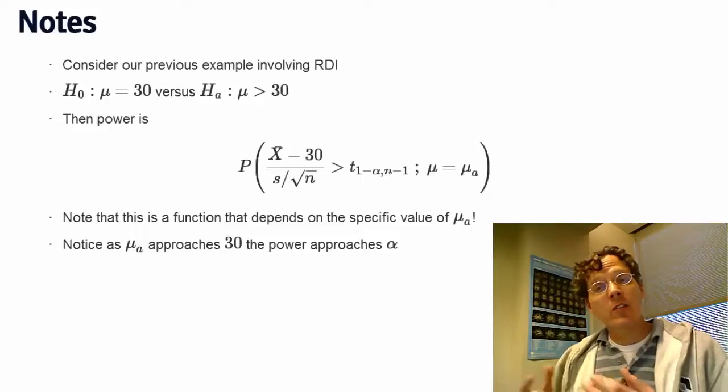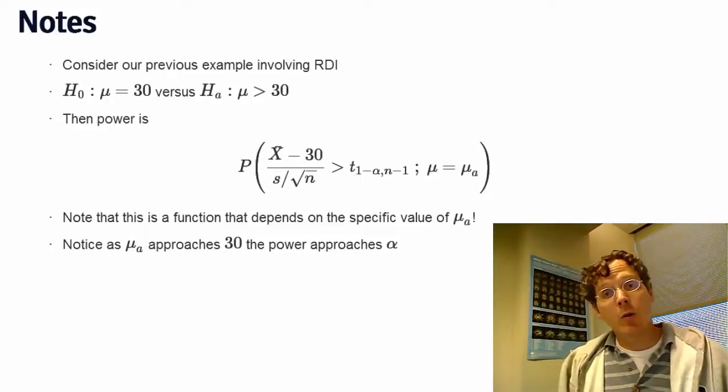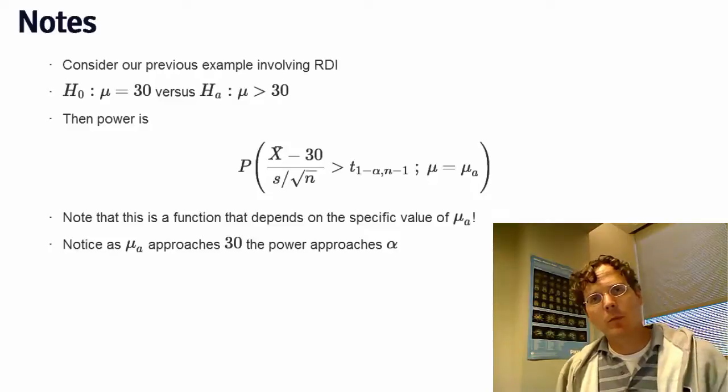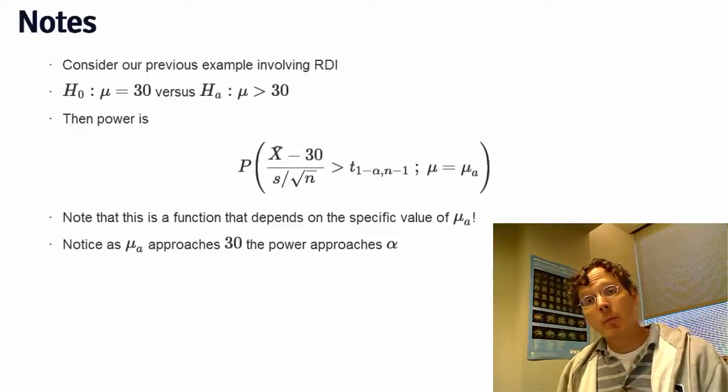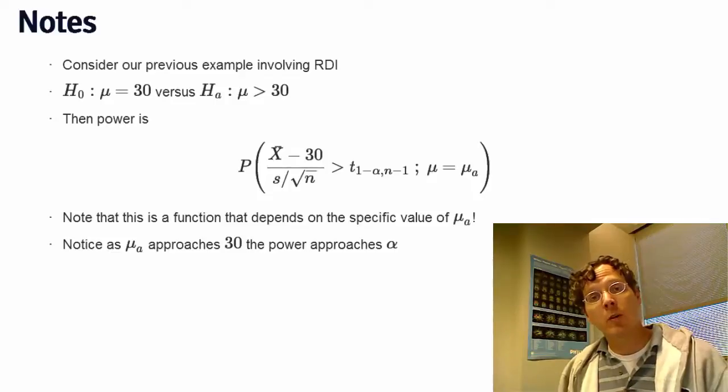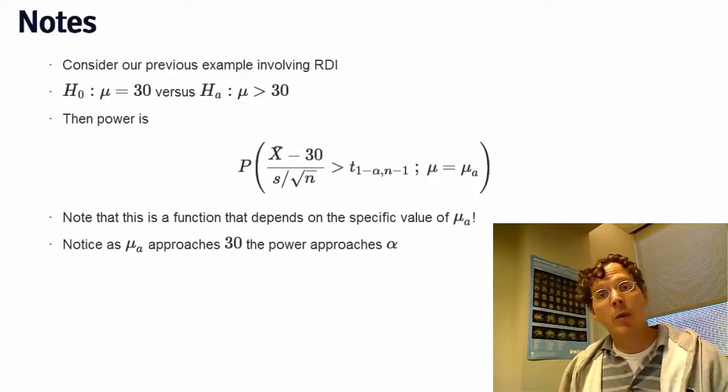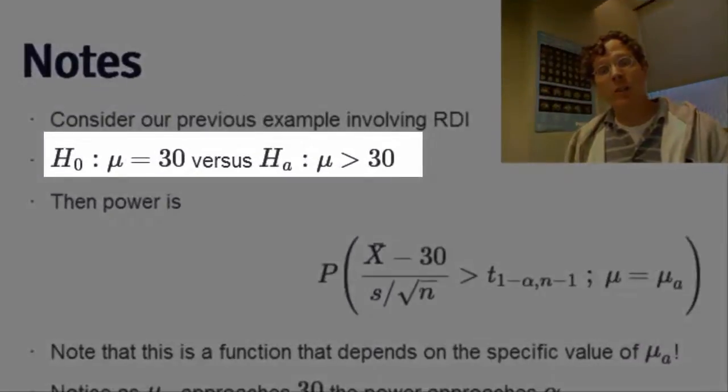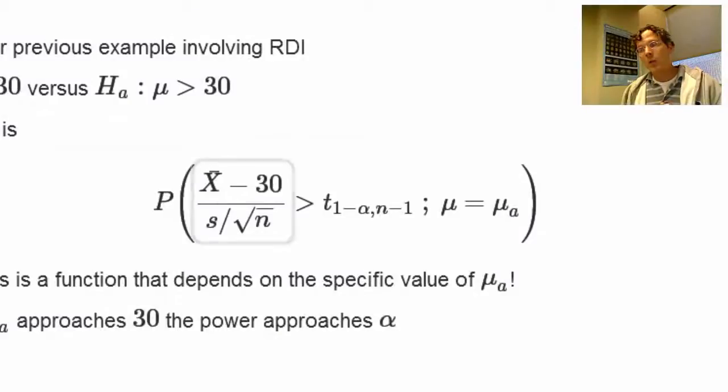So, let's go through a conceptual example and then we'll go through some specific numerical examples. Remember we were interested in talking about the hypothesis test for the mean respiratory disturbance index, RDI, in a particular population of obese subjects. We wanted to test whether mu was 30 versus the alternative that mu was greater than 30. We did a t-statistic, which is, in this case, our sample mean minus the hypothesized value, 30, divided by the standard error of the mean.